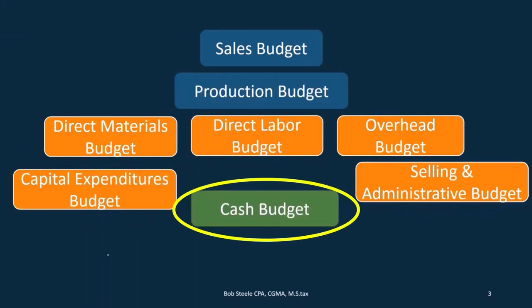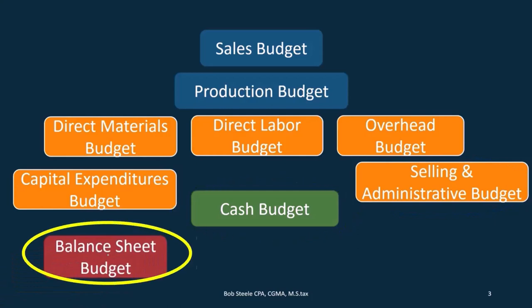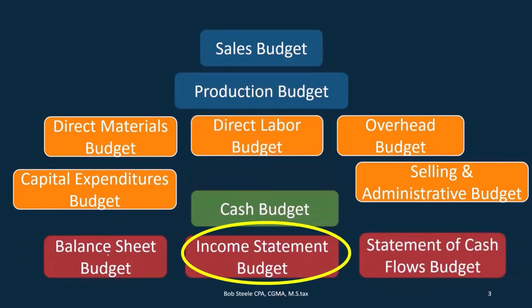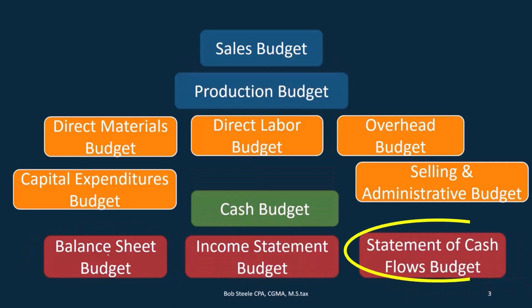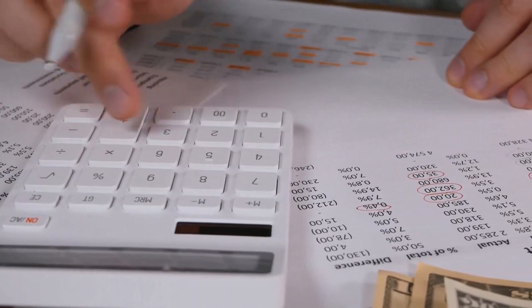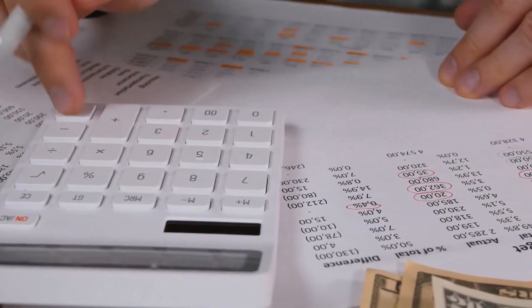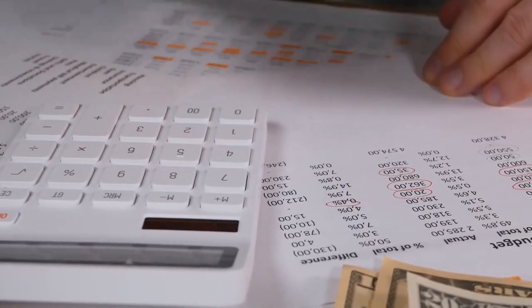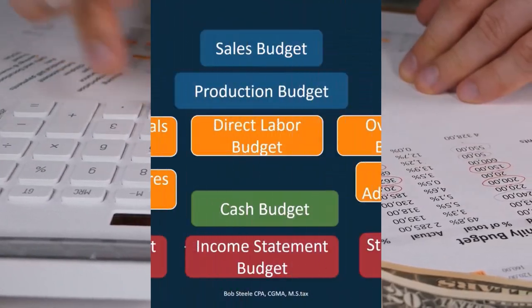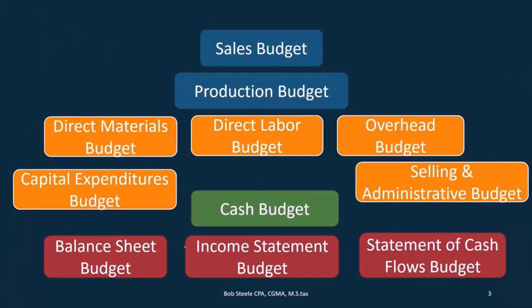Then we can put together the statements: the balance sheet budget, the budgeted income statement, as well as the cash flow. We also had some other worksheets in order to calculate the income statement. We wanted to calculate the cost of goods sold, and in order to do that, we needed to have the cost of goods manufactured.